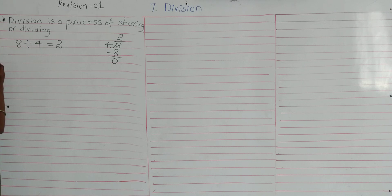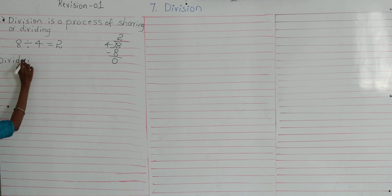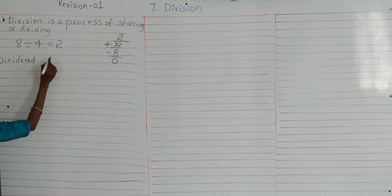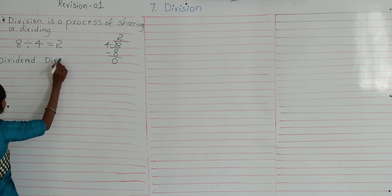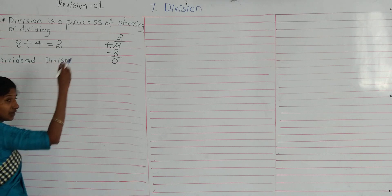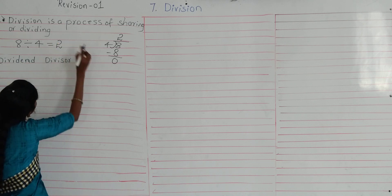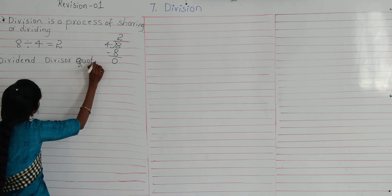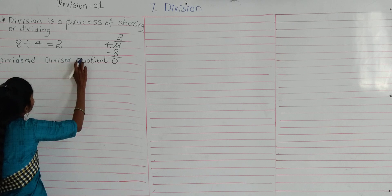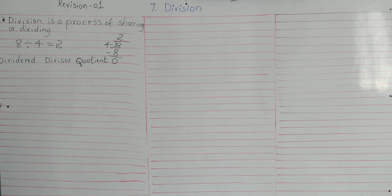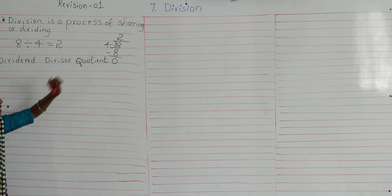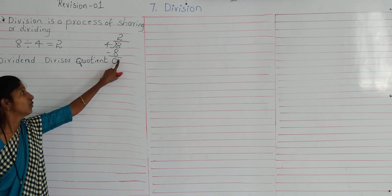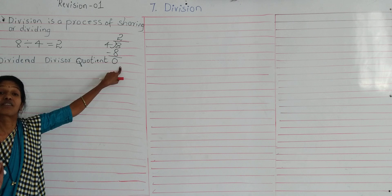The total number of toffees is considered as the dividend. The number of friends is the divisor. So each friend will get 2, which is the quotient. These are the division terms: dividend, divisor, and quotient.